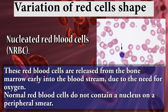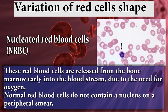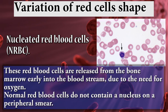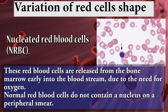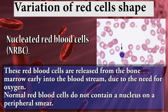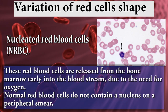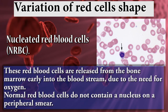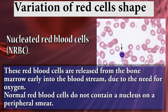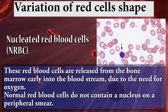Nucleated red blood cells (NRBCs) are red blood cells released from the bone marrow early into the bloodstream due to the body's need for oxygen. Normal red blood cells do not contain a nucleus on peripheral smear.